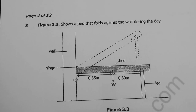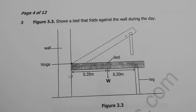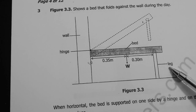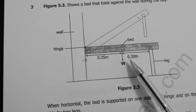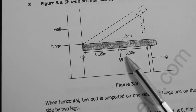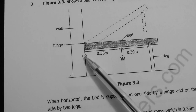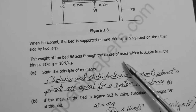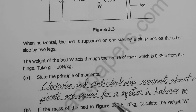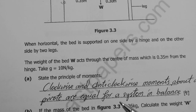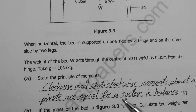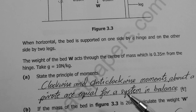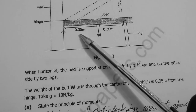Question three: figure 3.3 shows a bed that folds against the wall. These involve moments — the effect of force on objects. The leg of the bed, the center of weight is concentrated along this line. There's a distance from the center of weight, and the hinge is our pivot. The weight of the bed w acts through the center of mass, 0.35 meters from the hinge.